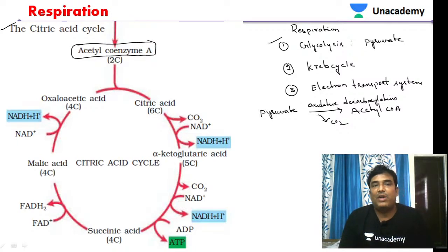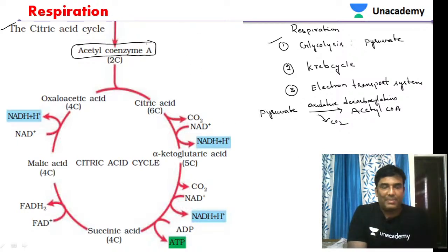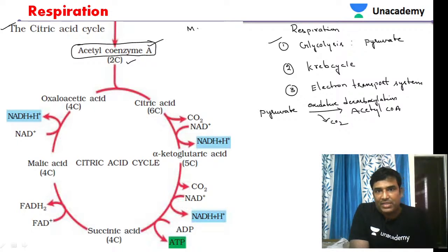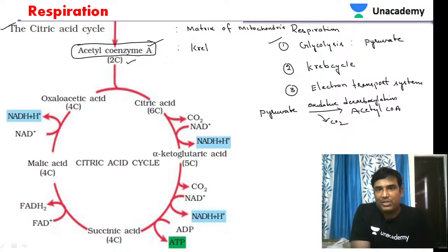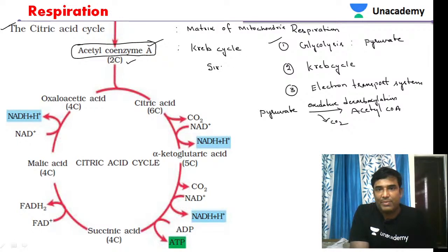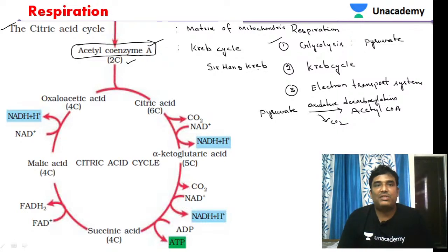Acetyl coenzyme A initiates the citric acid cycle or the Krebs cycle. It is a two-carbon compound. The citric acid cycle takes place in the matrix of mitochondria, because all the enzymes required are present there. The citric acid cycle is also called the Krebs cycle. It was first identified by the scientist Sir Hans Krebs, which is why it is called the Krebs cycle.